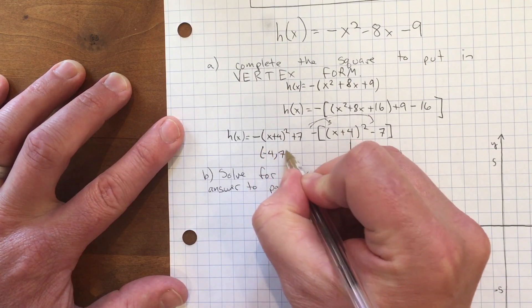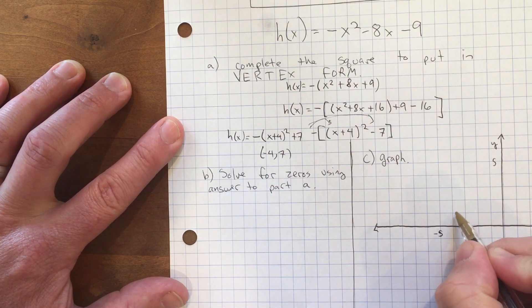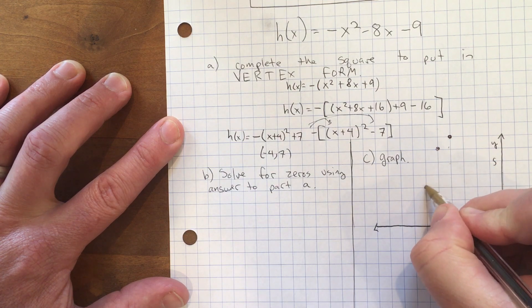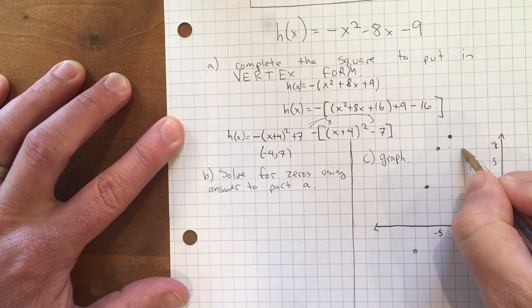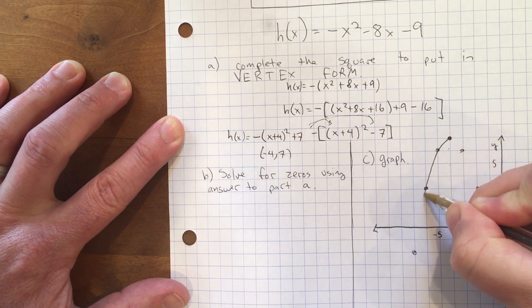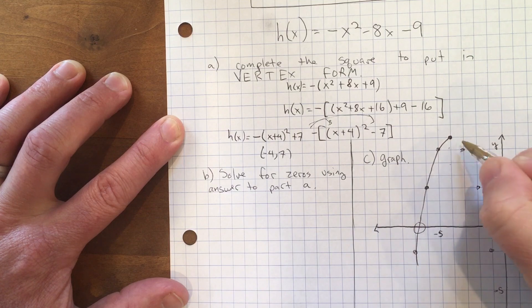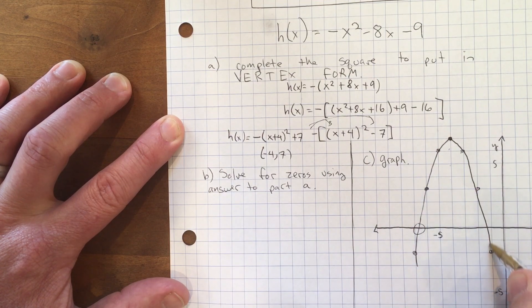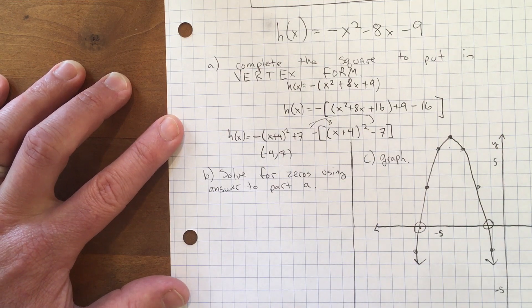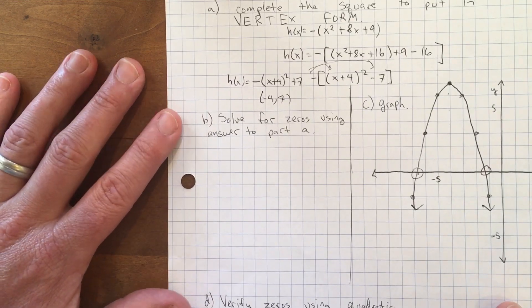The vertex is at (-4, 7). See here, negative 4 and 1, 2, 3, 4, 5, 6, 7, and then I'll make a parabola like so. We can see that the zeros are not rational, they're not right on a line, but let's solve for those zeros now.